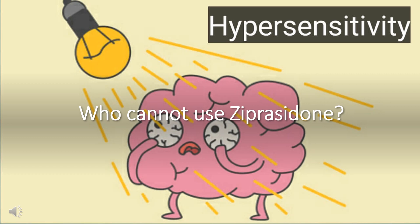Ziprasidone is also contraindicated in patients taking medicines that have demonstrated QT prolongation, including class IA and III antiarrhythmics, dofetilide, sotalol, quinidine, thioridazine, mesoridazine, chlorpromazine, pimozide, droperidol, sparfloxacin, moxifloxacin, gatifloxacin, halofantrine, pentamidine, mefloquine, arsenic trioxide, levomethadyl acetate, dolasetron mesilate, probucol, or tacrolimus.